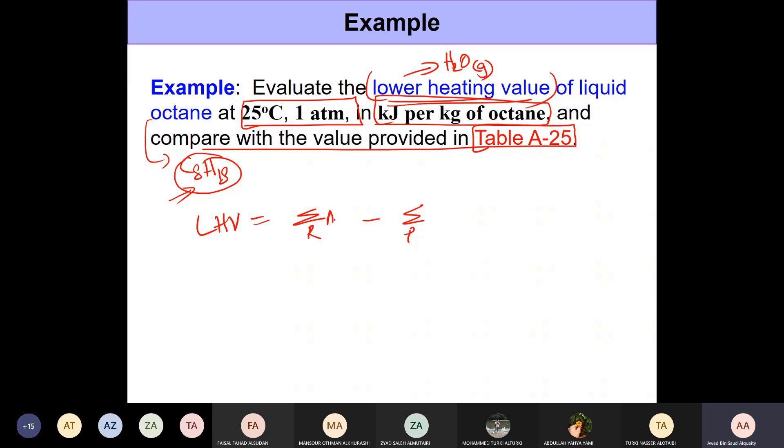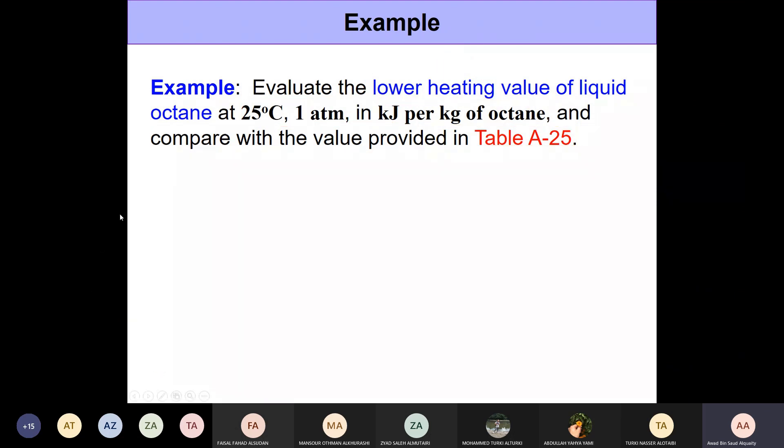We have NiHi minus NeHi. If you want to determine the mole fractions, the number of moles, and the enthalpies, you need to write the balanced chemical equation first. Once you have the balanced chemical equation we can go ahead and plug in these numbers. So the first step is to write down the balanced chemical equation.